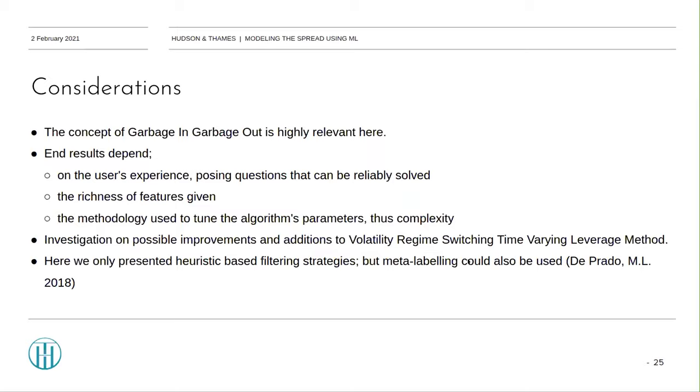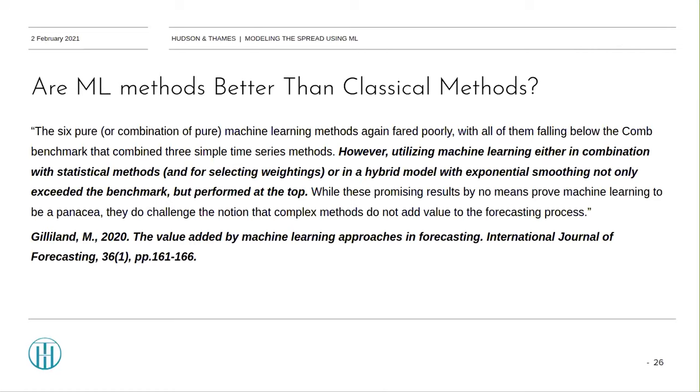The question: Are machine learning methods better than classical methods? Here I'm going back to the M4 forecasting competition and taking a quote from the paper The Value Added by Machine Learning Algorithms in Forecasting by Gilliland 2020 that nicely approximates the current state of machine learning in forecasting. The six pure machine learning methods fared poorly, with all of them falling below the COM benchmark that combined three simple time series methods. However, utilizing machine learning either in combination with statistical methods or in a hybrid model with exponential smoothing not only exceeded the benchmark but performed at the top. While these promising results by no means prove machine learning to be a panacea, they too challenge the notion that complex methods do not add value to the forecasting process.